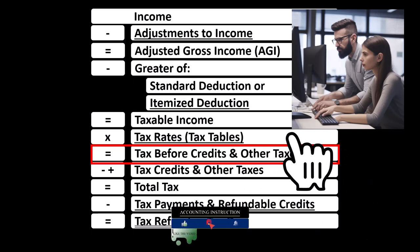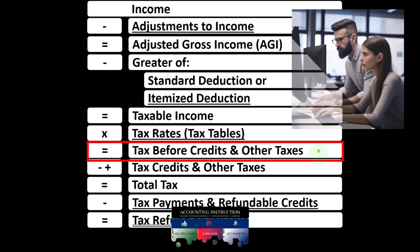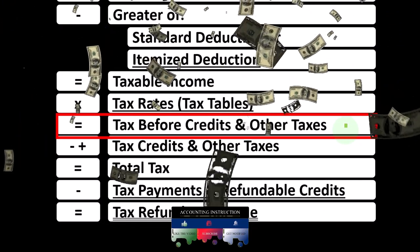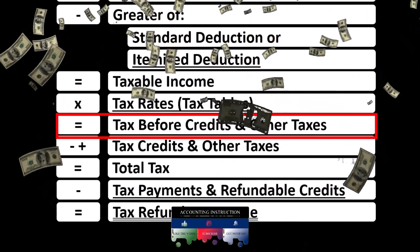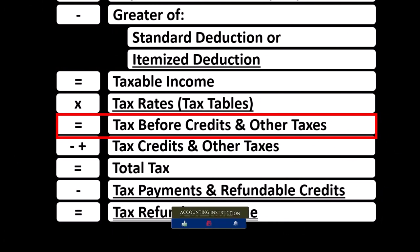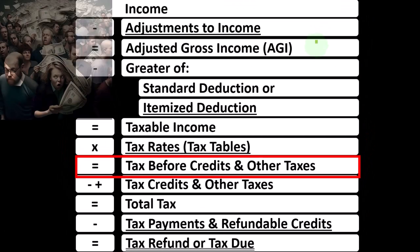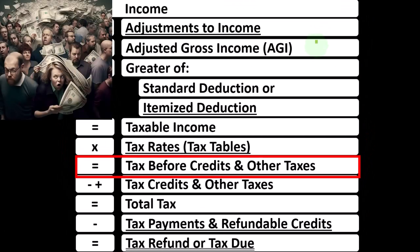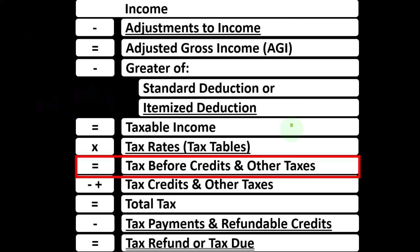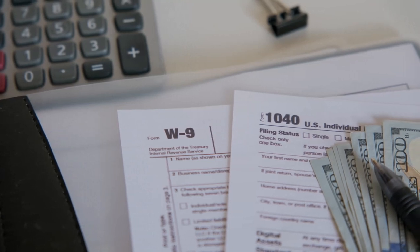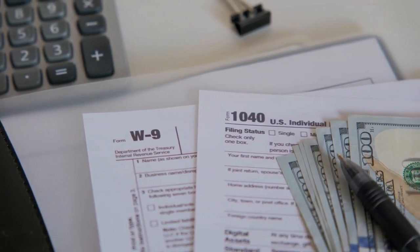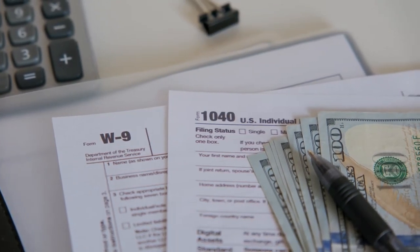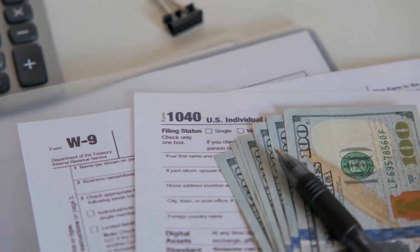The first half of the income tax formula is in essence an income statement, although a strange one, where we have income minus the adjustments to income — which you can think of as the above-the-line deductions — getting us to the subtotal of adjusted gross income, minus the greater of the standard or itemized deductions, to get us to taxable income, which is similar to net income in a normal income statement structure.